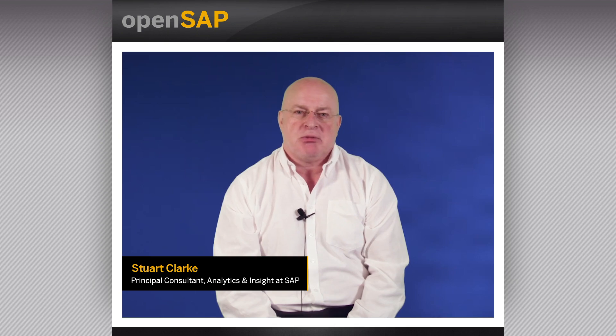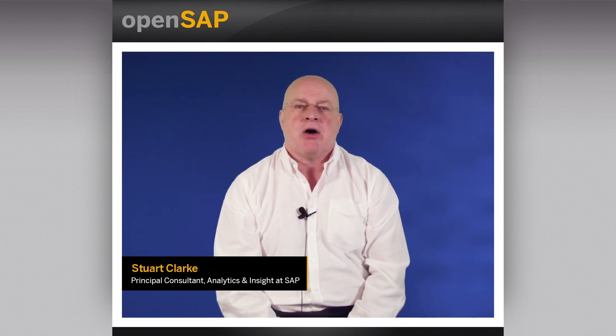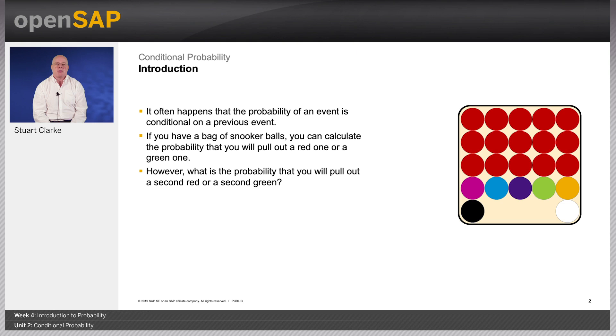Welcome to unit 2 of this week's course on probability and Bayes' theorem. In this unit we'll be looking at conditional probability, that is the likelihood of an event based on knowledge of another event having taken place already. It often happens that the probability of an event is conditional on a previous event.